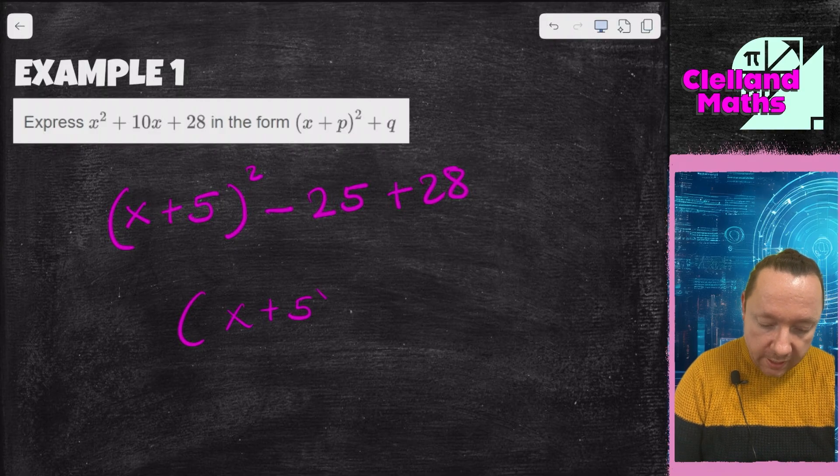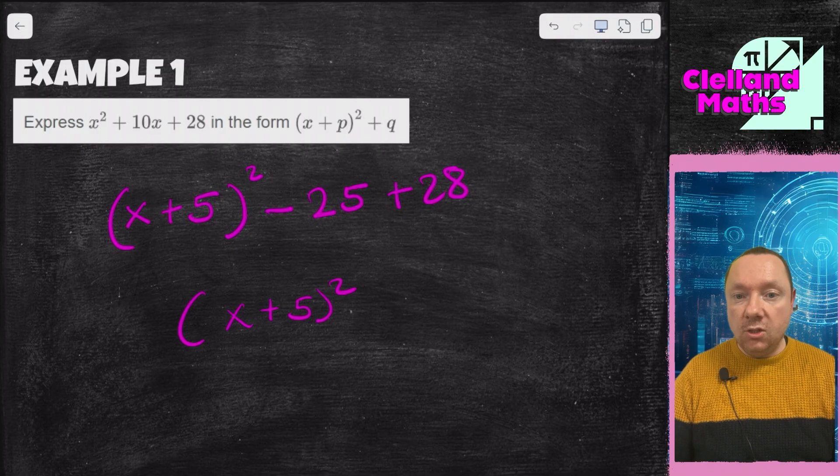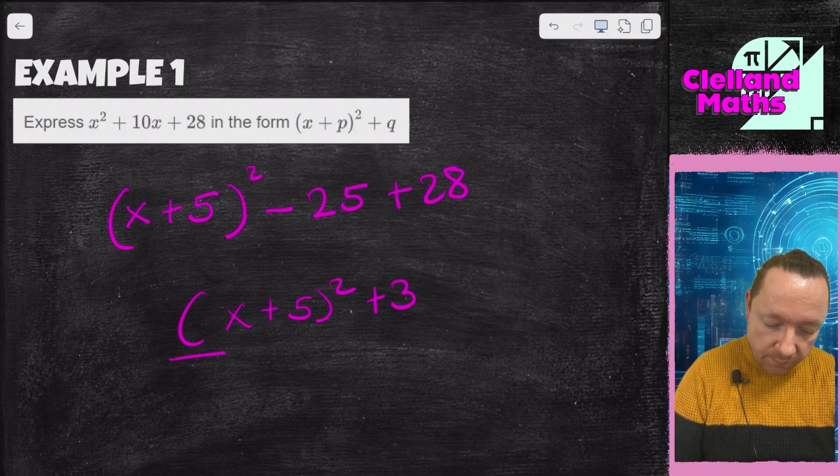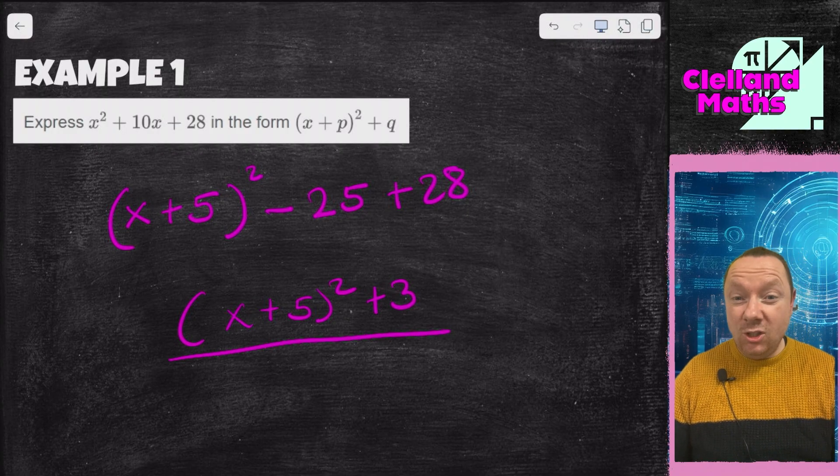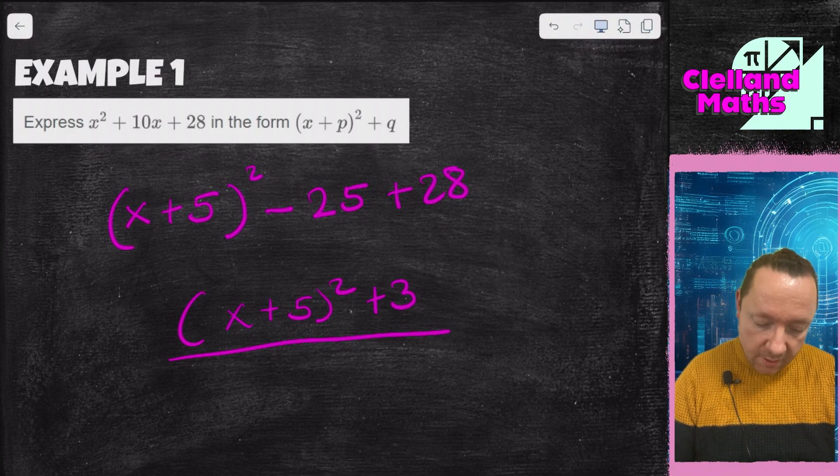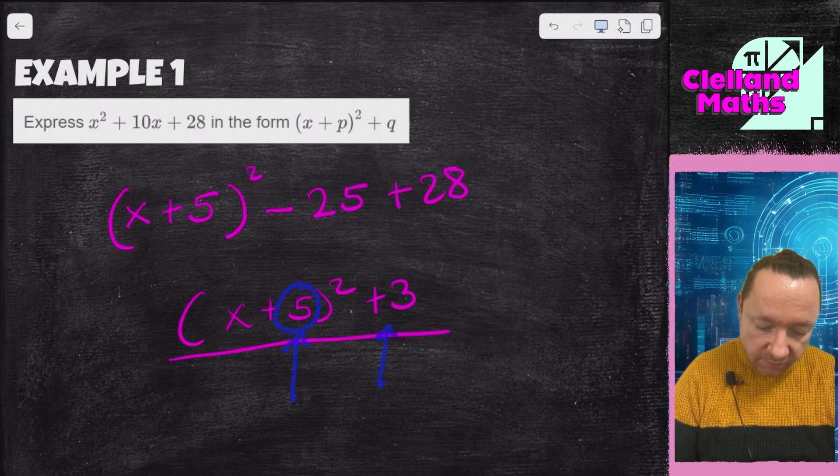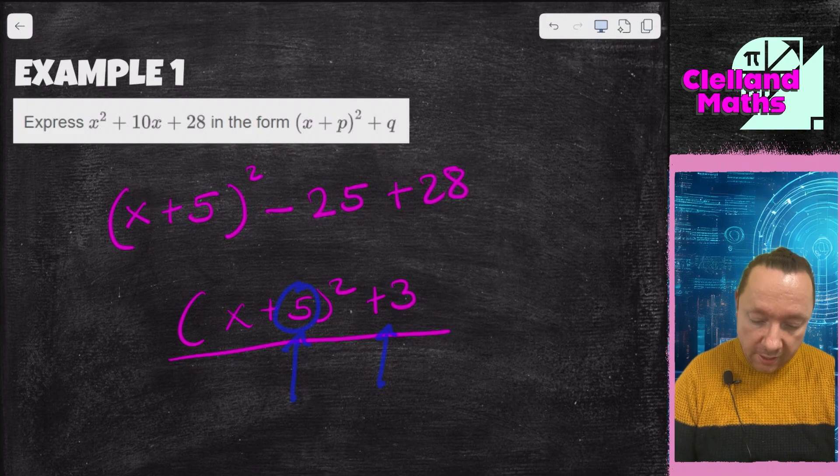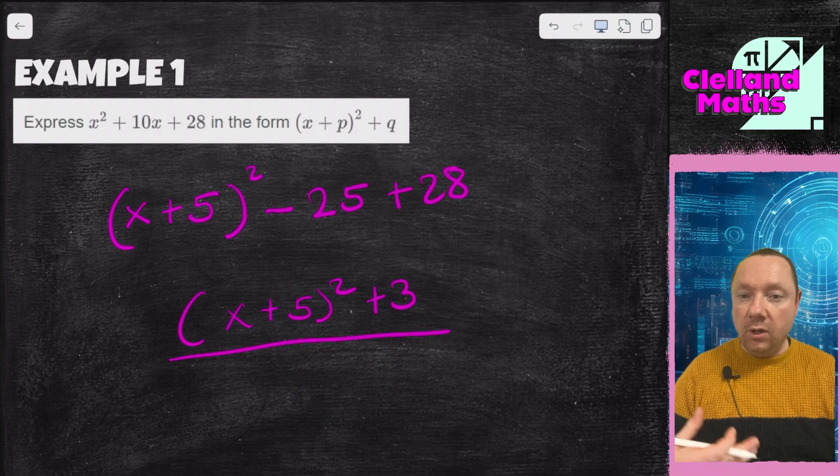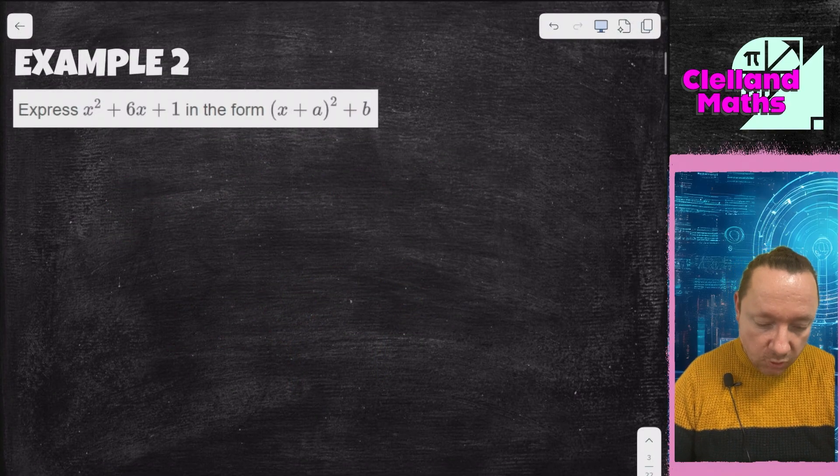Now I can just work that out. x plus 5 all squared, 28 minus 25 is 3, so plus 3. Later on, you'll learn that tells you something. It tells you the turning point. The turning point is given to you by these two numbers, and it's minus 5 because it makes the bracket 0 and 3. So it tells you the turning point if you have to draw the graph or state the turning point.